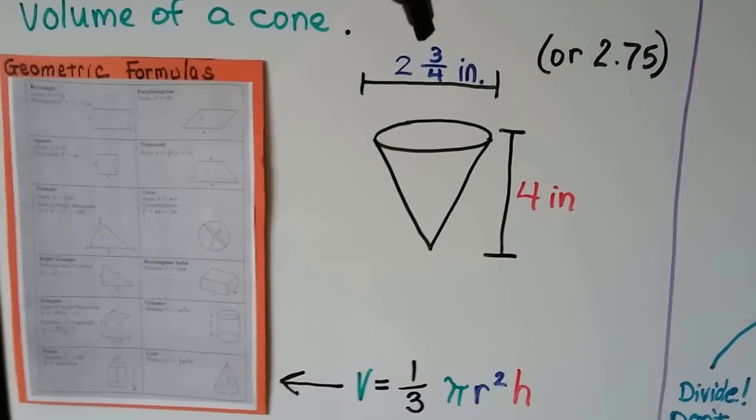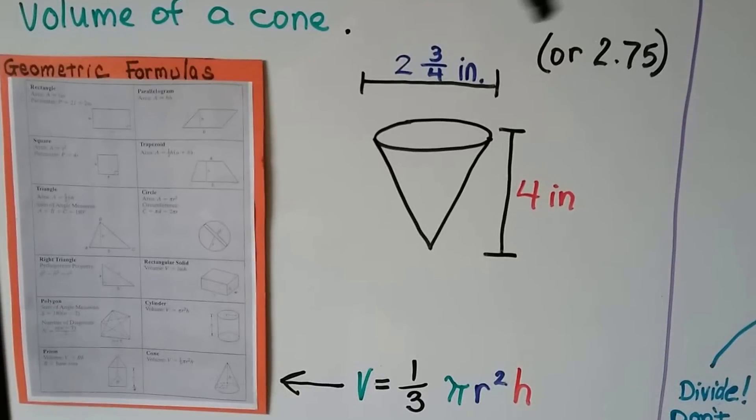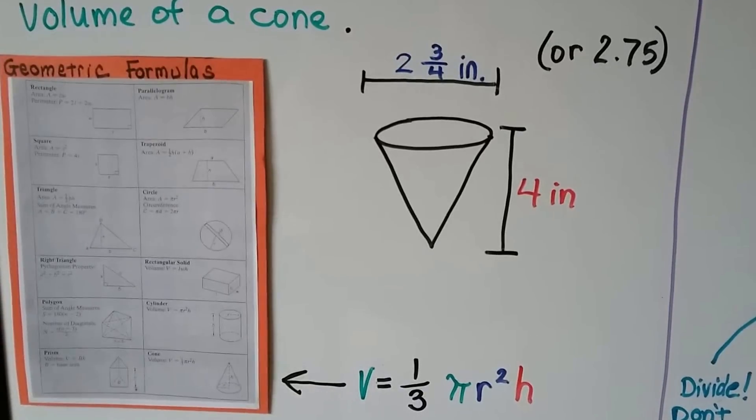First thing we want to do is turn this into a decimal. 2 and 3 fourths inches is 2.75 inches.